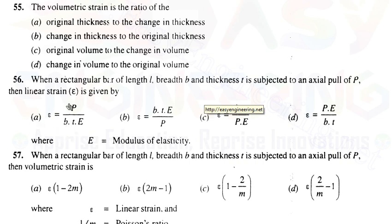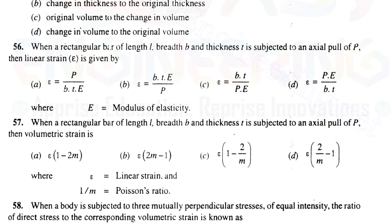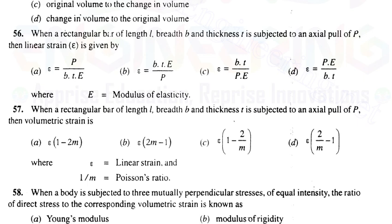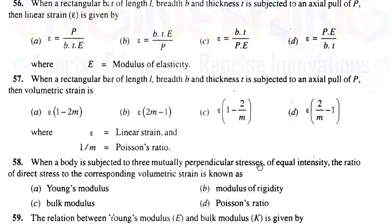Question 57: When a rectangular bar is pulled axially, the volumetric strain formula is linear strain times (1 minus 2μ). Here μ is the Poisson's ratio, so volumetric strain equals linear strain times (1 minus 2/m), where 1/m represents Poisson's ratio.